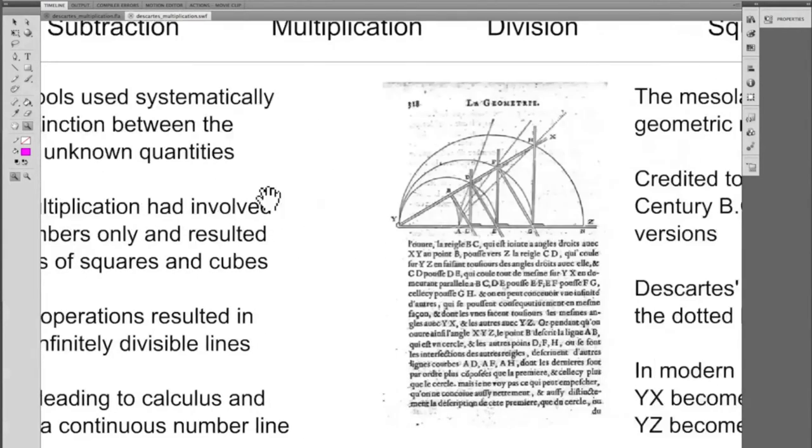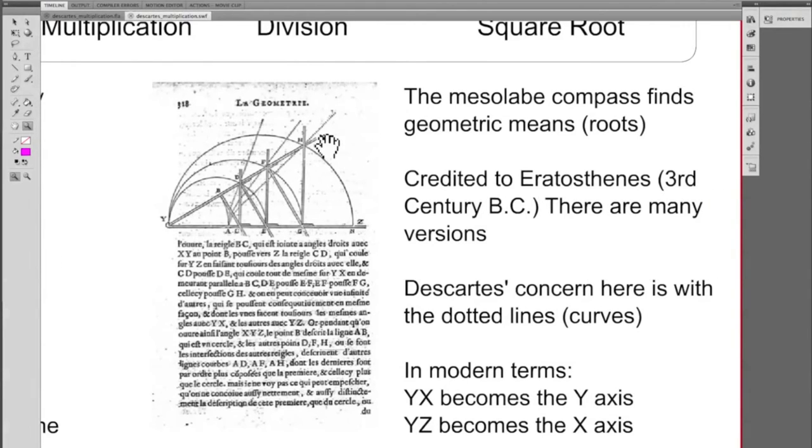Descartes addressed dynamics and motion with his mesolabe or proportional compass. In modern coordinate systems, YX becomes the Y axis and YZ becomes the X axis.